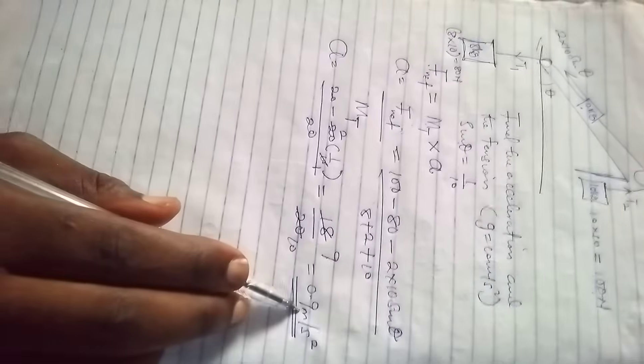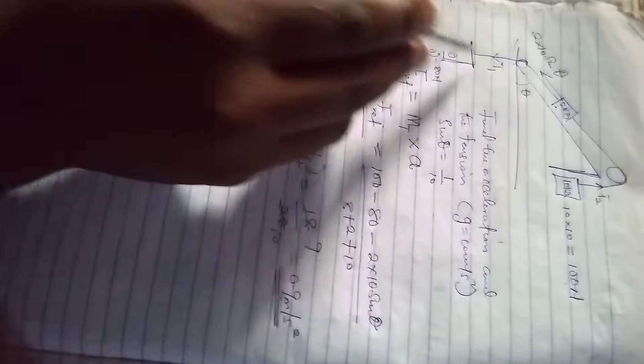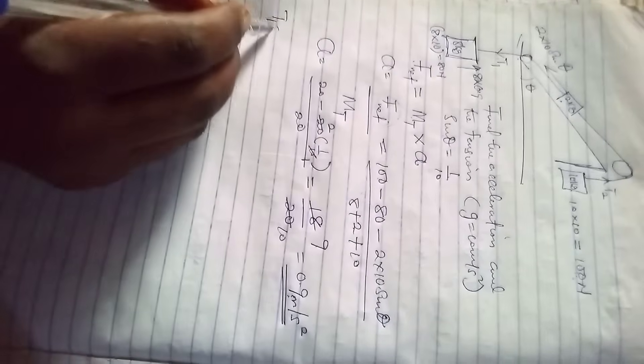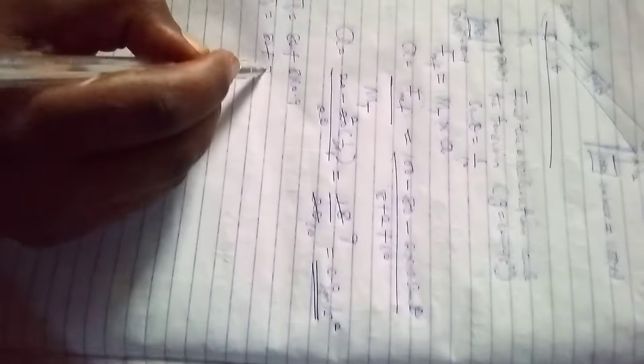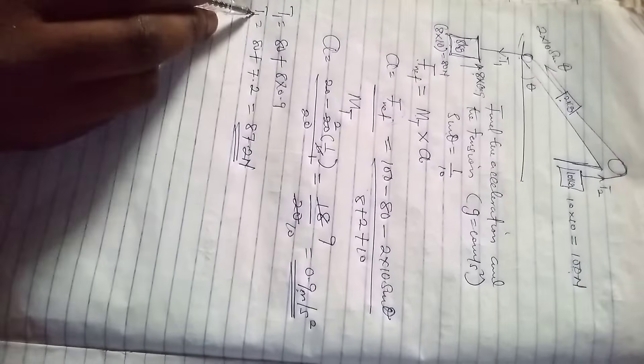We found the acceleration. So remain the tension 1 and tension 2. For tension 1, since it's bringing it up, it will require an additional force. So we have the force of gravity and the force pulling it up. For T1, we are going to have 80 plus 8 times 0.9. T1 equals 80 plus 8 times 0.9 will give you 7.2, which gives me 87.2 Newton.